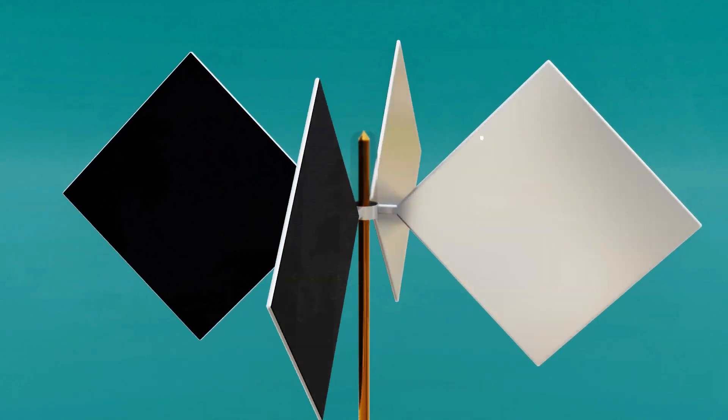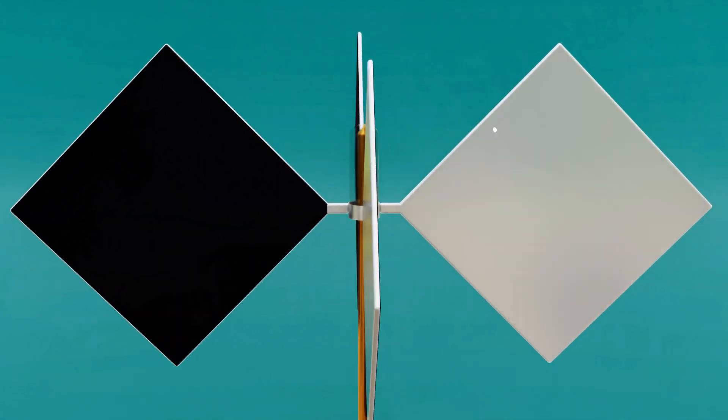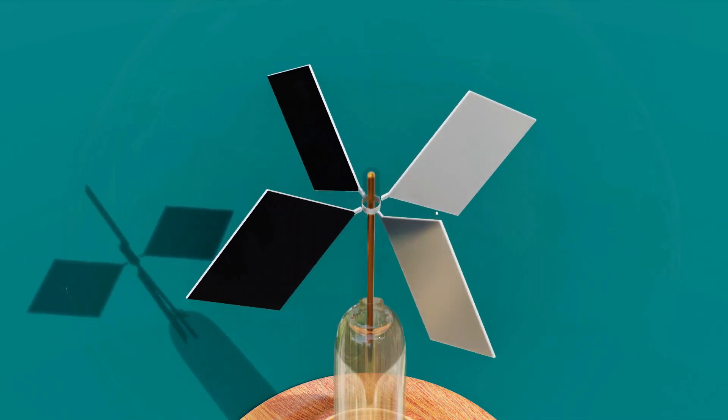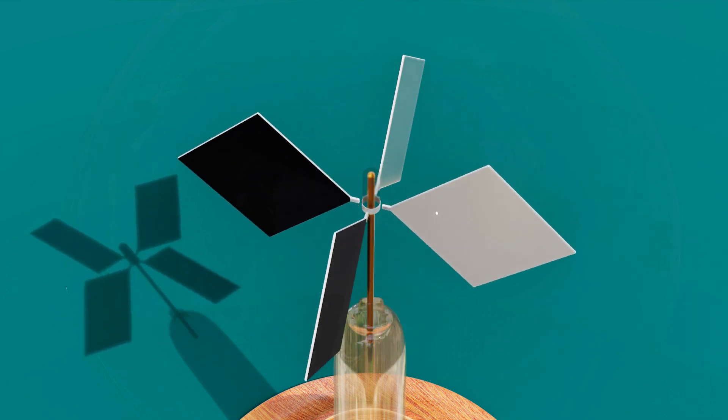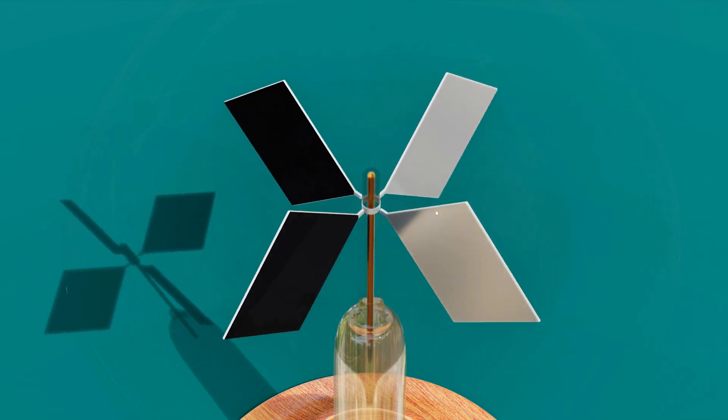The veins are typically arranged so that all the black sides face the same way, usually counterclockwise when viewed from above. This means when the device spins, the black sides trail behind.